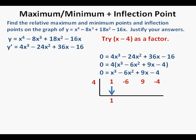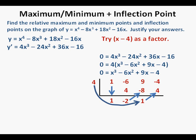We bring down the 1 in the x squared place. Next we multiply 4 by 1, which equals 4, and bring it down under the negative 6 in the x's column. We take the sum of negative 6 and 4, which is negative 2. Now we take 4 times negative 2 and place the product negative 8 below the 9. We bring down the sum of 9 and negative 8, which is 1. Then we multiply 4 by 1 and place the product 4 below the negative 4. We add negative 4 and 4 to get our remainder, which is 0.